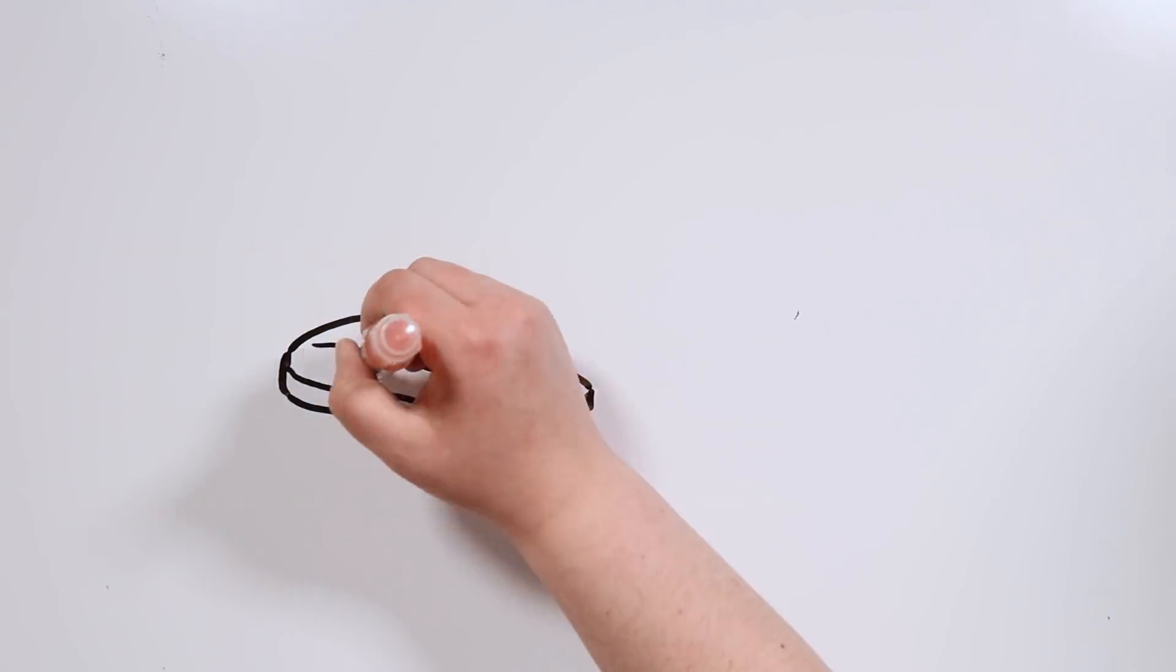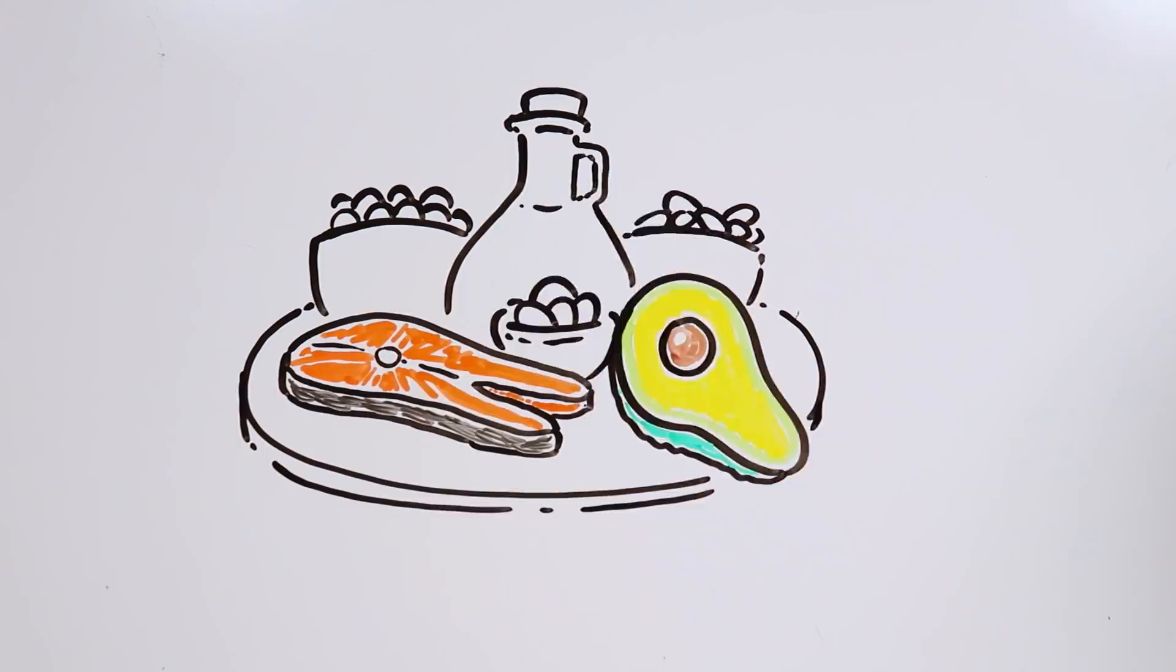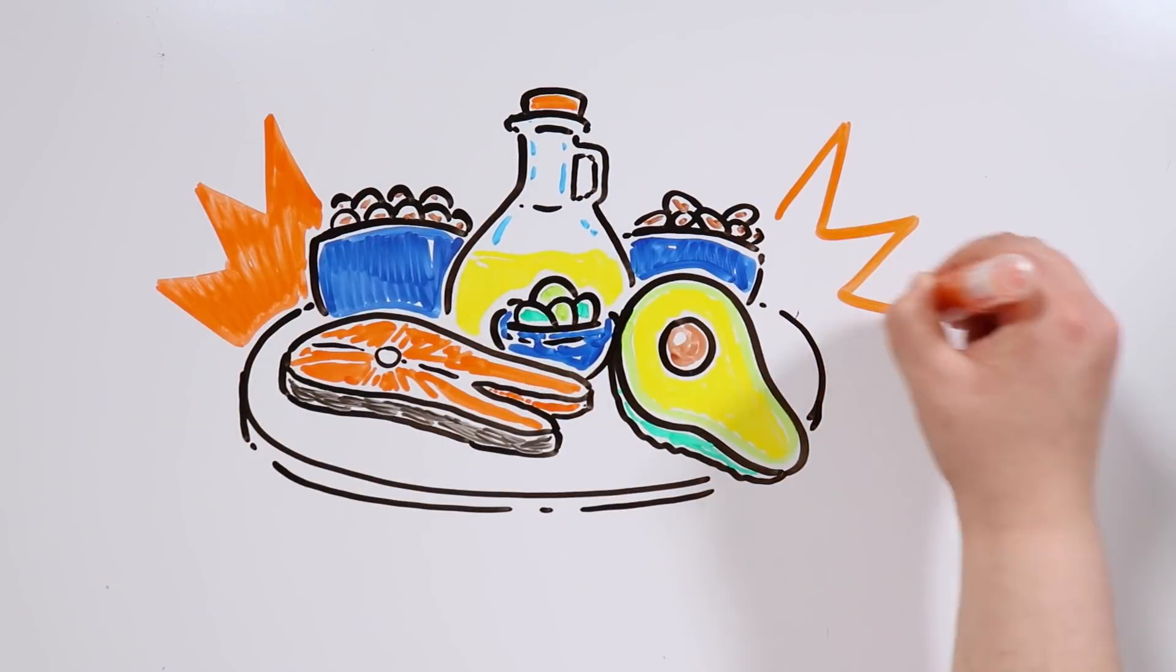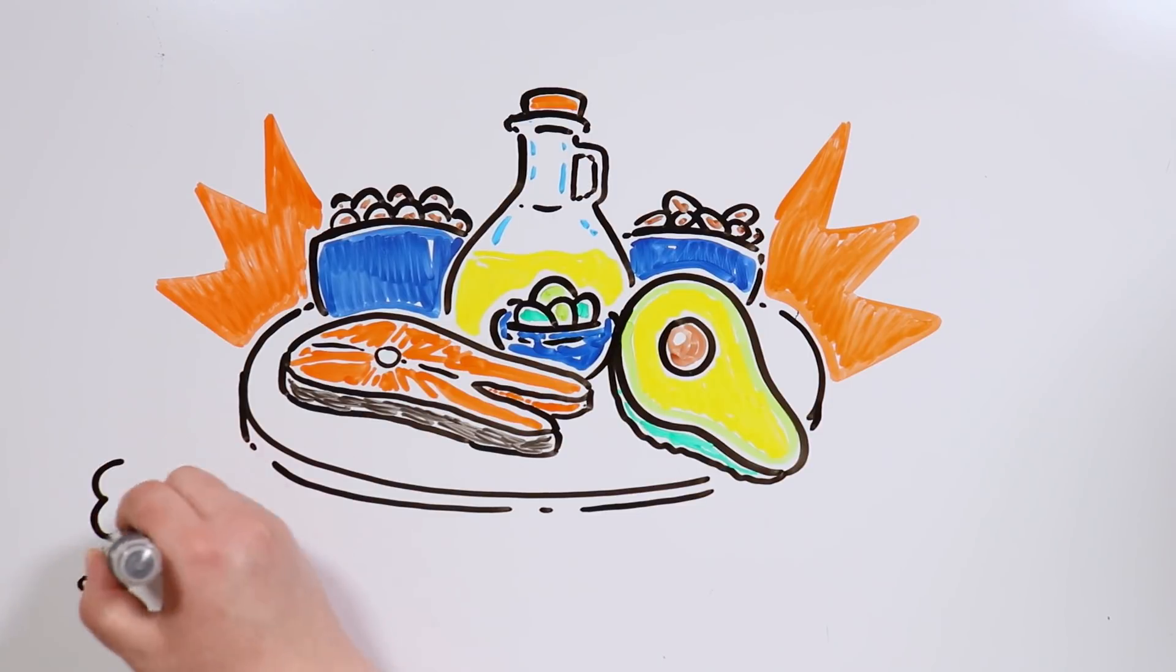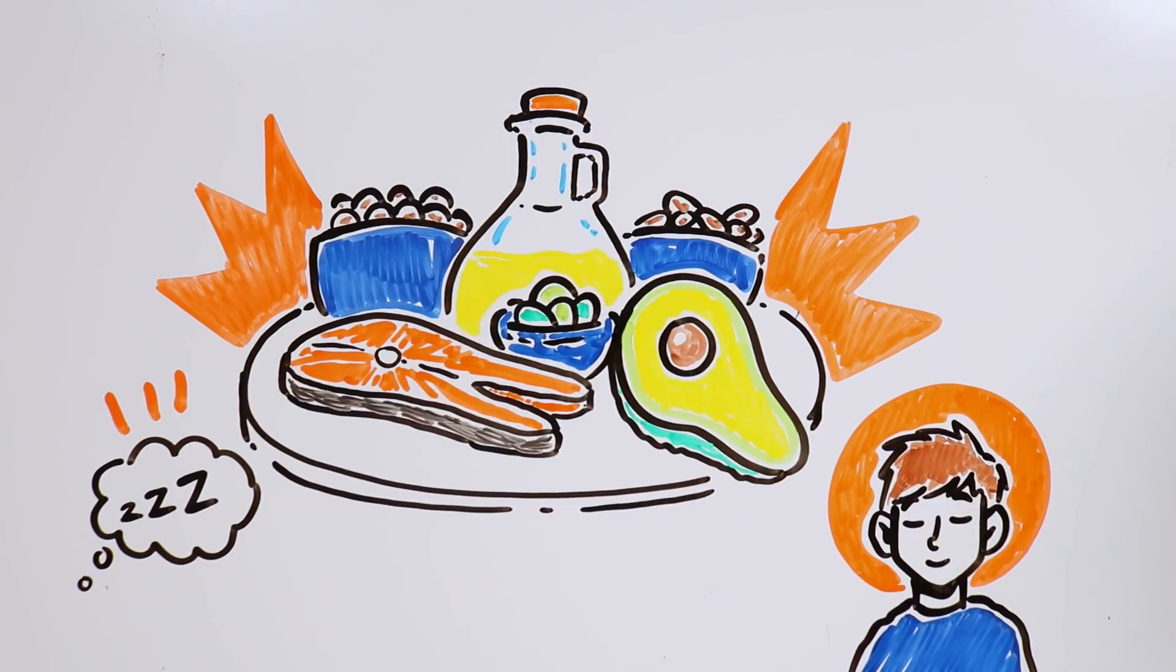It is also common for people with epilepsy to follow the ketogenic diet, a special diet rich in healthy fats, low in carbs, and also limited in calories. Other ways to prevent epileptic attacks also include sleeping well and reducing the person's stress levels.